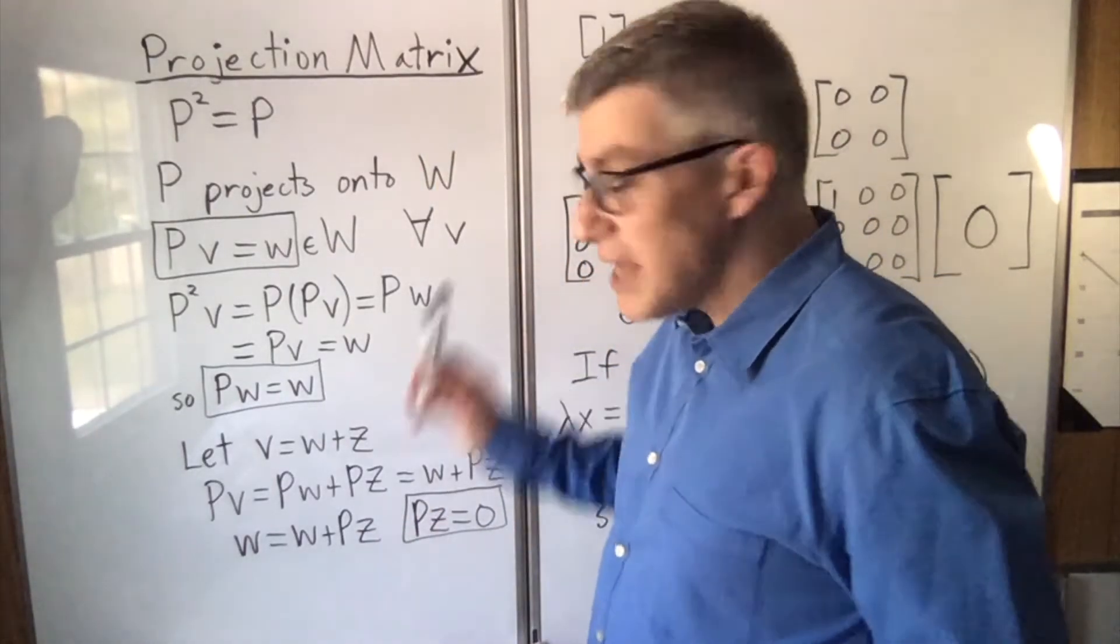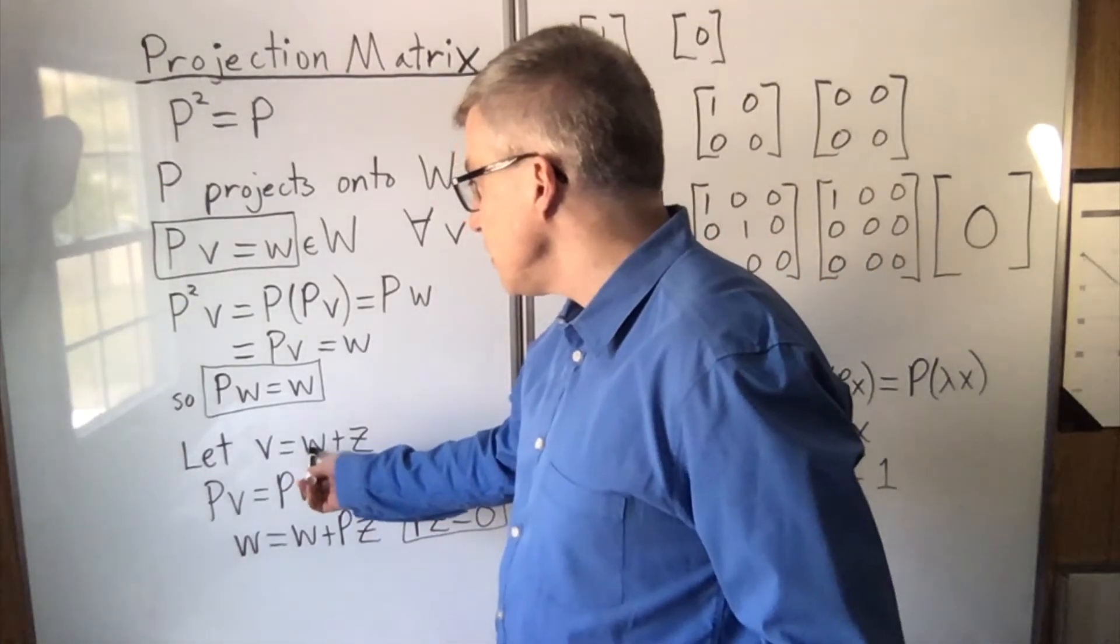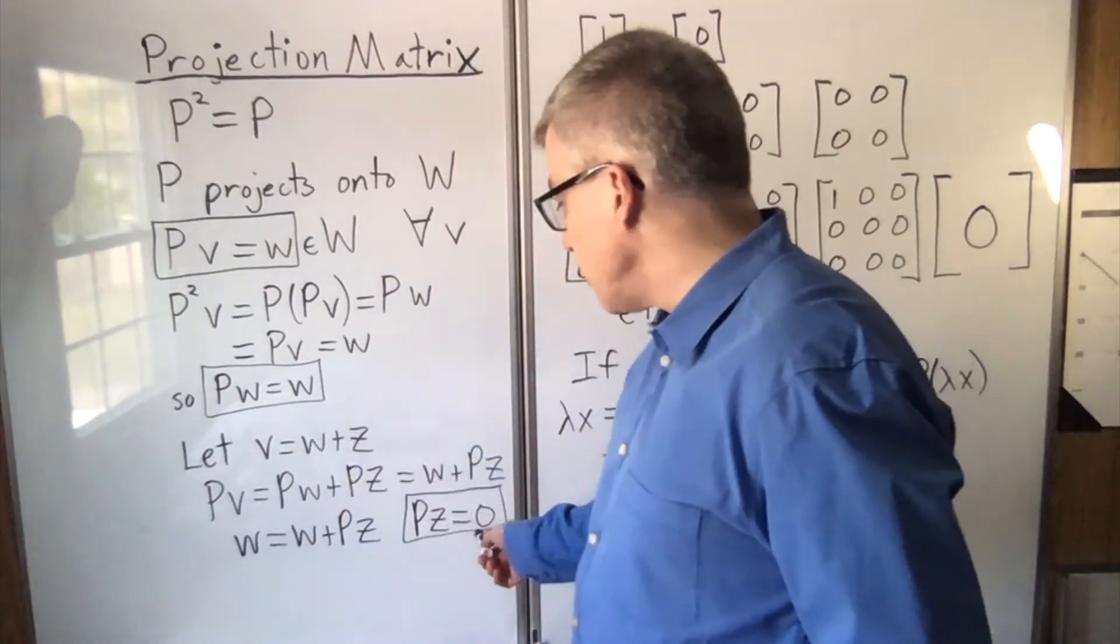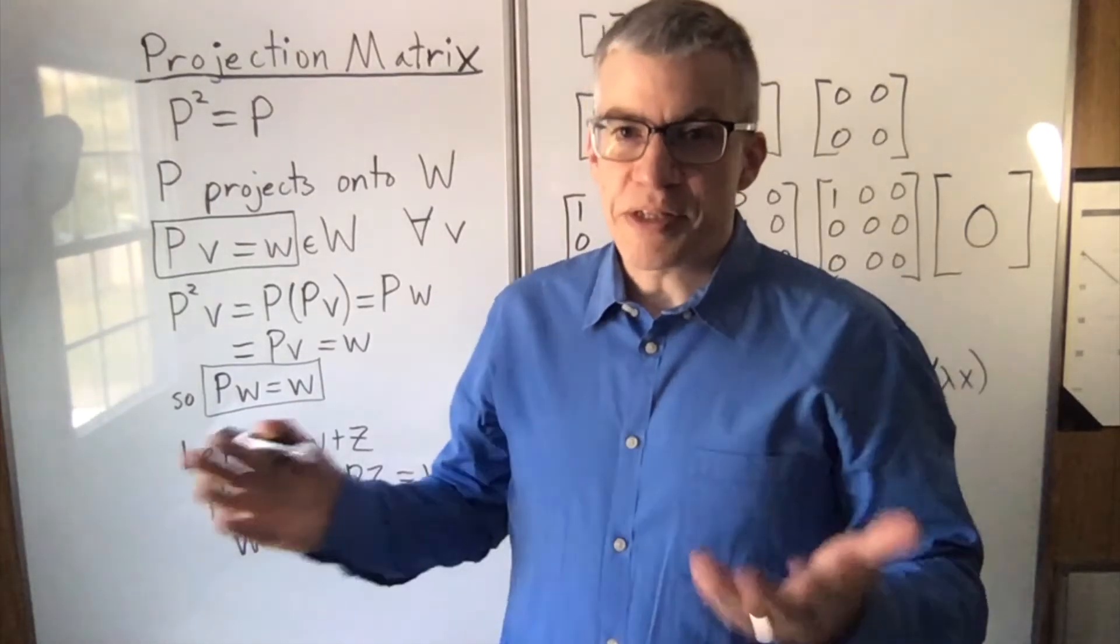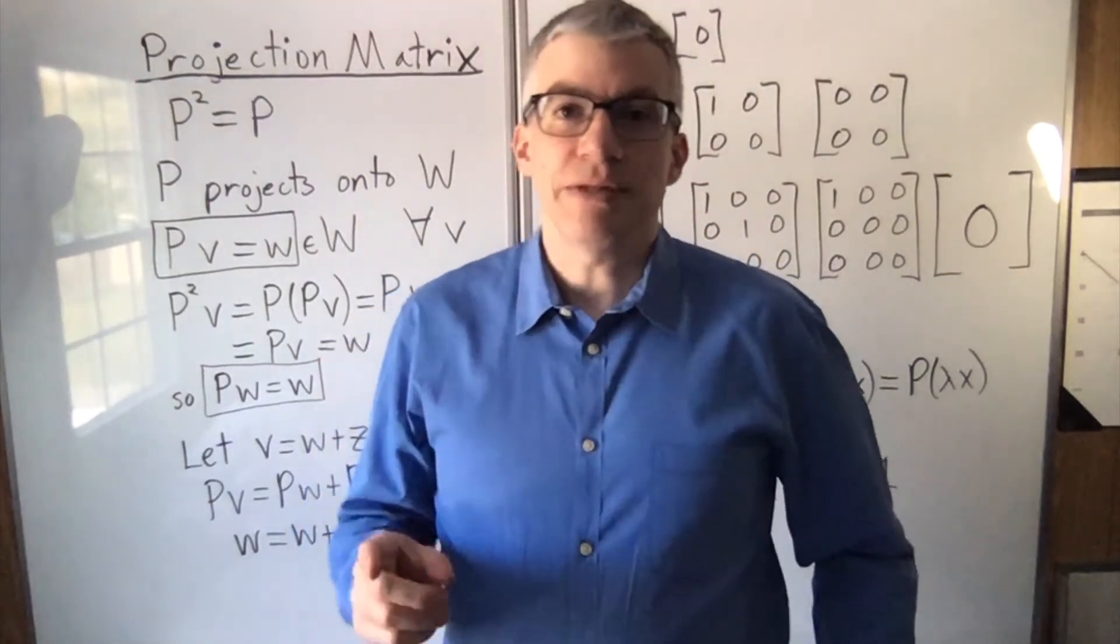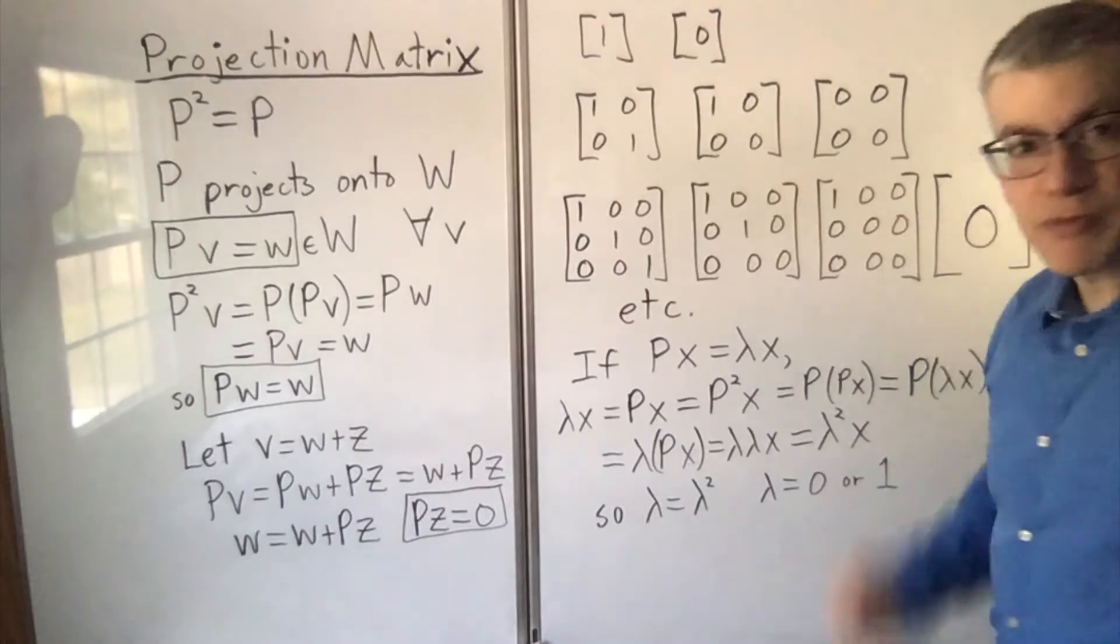Which means that any vector can be broken up into a component that is an eigenvector with eigenvalue 1, and a component that is an eigenvector with eigenvalue 0. Since everything is a sum of eigenvectors, that means you can diagonalize it. And since the eigenvalues are 0 or 1, you always get something of this form.